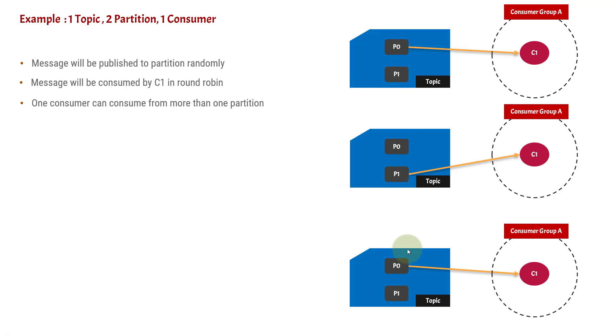So we have proved our point: message publishing is random but the consumer reads in round-robin manner, and importantly it reads from both partitions. I hope you have understood this concept. Thank you for watching this video. Please subscribe to my channel and share these videos with other people. Thank you very much.